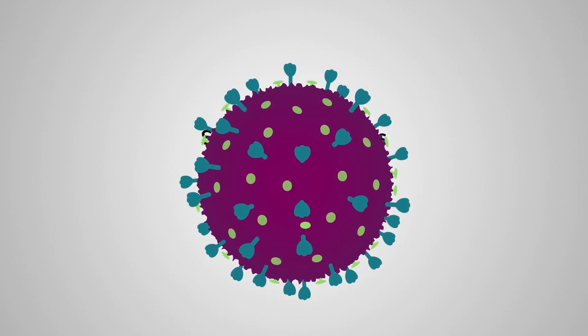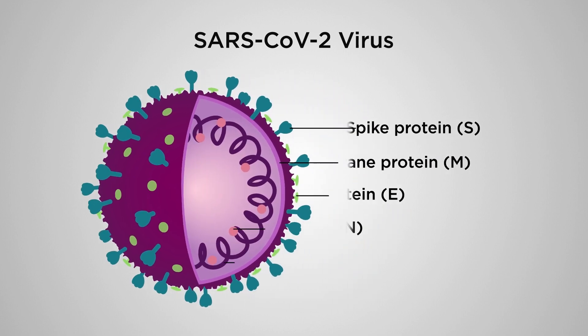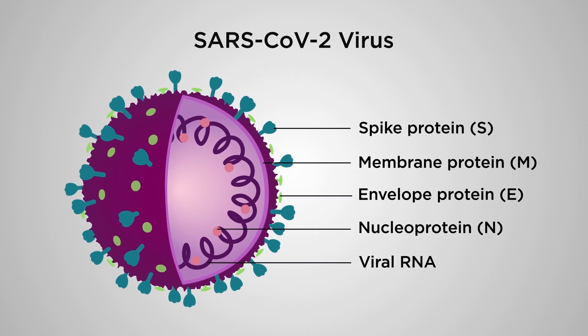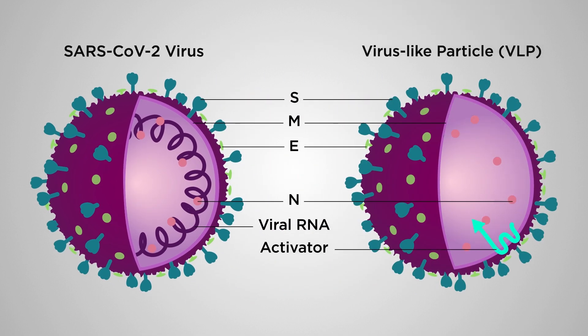SARS-CoV-2 particles contain a membrane, four structural proteins, and an RNA genome. Virus-like particles, or VLPs, are structurally identical, but are engineered to carry and activate a protein instead of the harmful viral RNA.